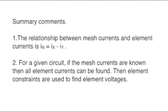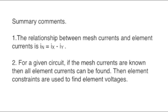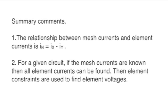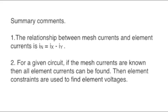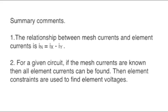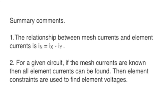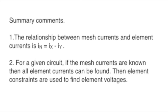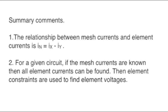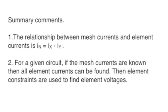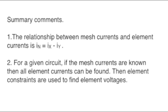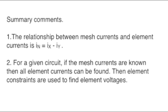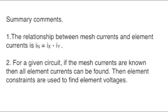We will end the lesson at this point and leave the discussion of how to calculate numerical values of mesh currents for the next lesson. Let's summarize: the relationship between mesh currents and a particular element current is given by I sub n equals Ix minus Iy. If we have the mesh currents, we can find all the element voltage and current for the entire circuit.